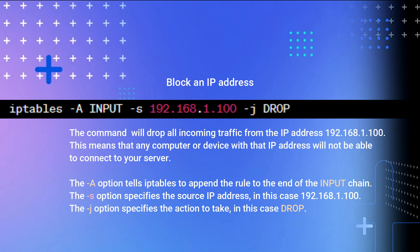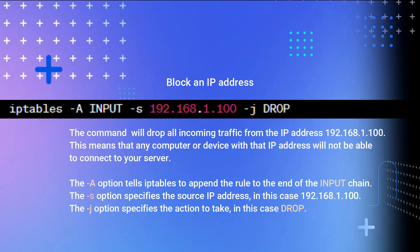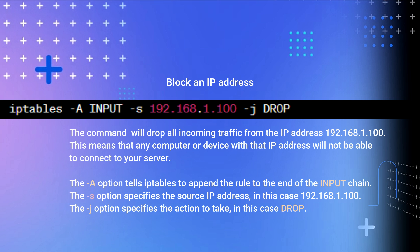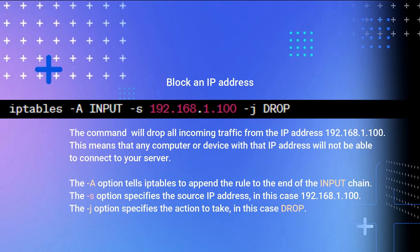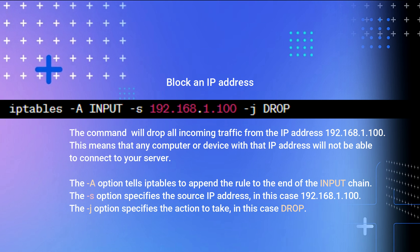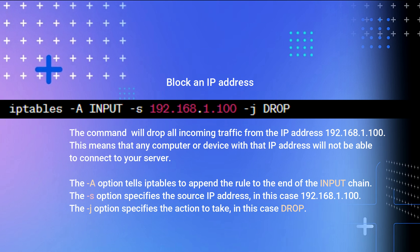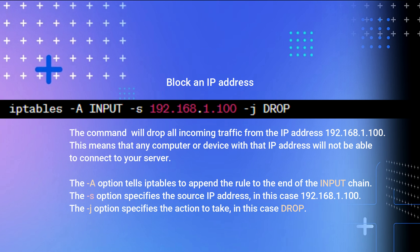Block an IP address: this command drops all incoming traffic from the IP address 192.168.1.100, meaning any computer or device with that IP address will not be able to connect to your server. The -A option appends the rule to the input chain, -s specifies the source IP address 192.168.1.100, and -j DROP specifies the action.